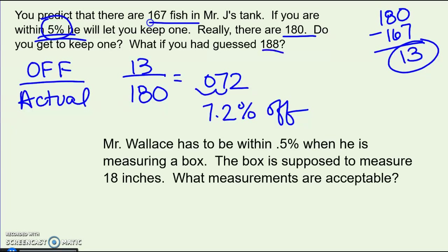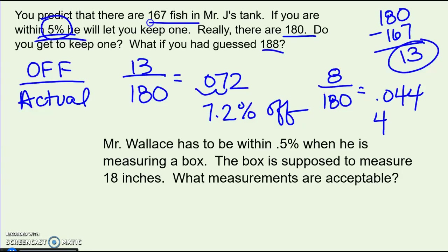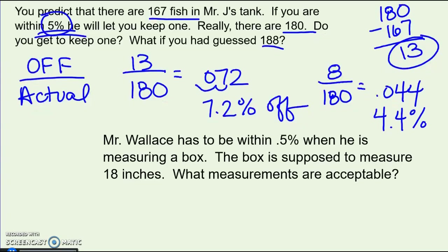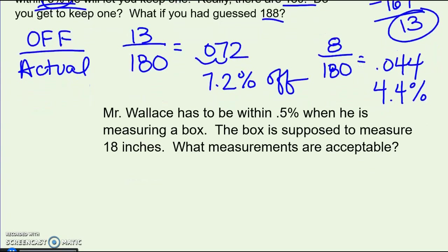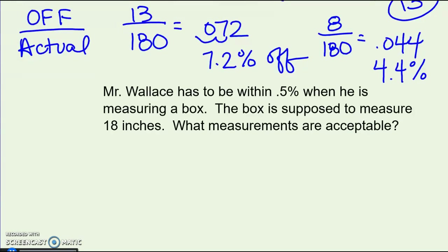What if you had guessed 188? Now you're only off by 8. With 180 as the actual, 8 divided by 180 gives 4.4% error — yes, that would have been close enough to be within the 5% threshold, so you would get to keep one.